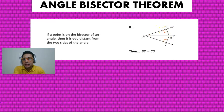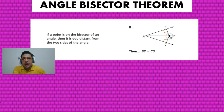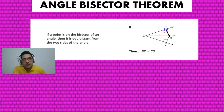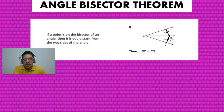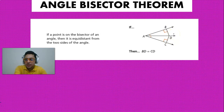then it is equidistant from the two sides. So the distance from D to B is going to be the same as the distance from D to C. This is the angle bisector theorem.